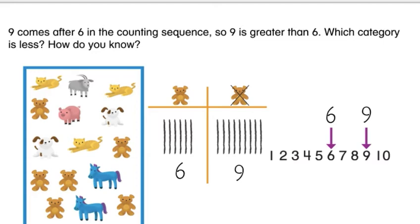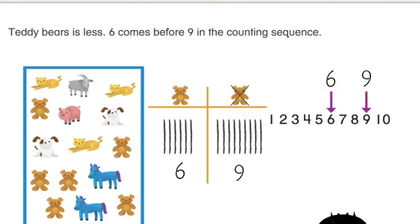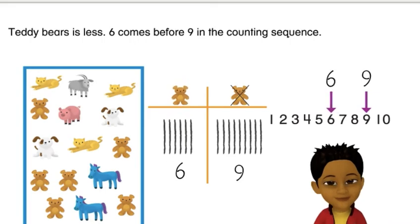Which category is less? How do you know? Teddy bears is less. Six comes before nine in the counting sequence.